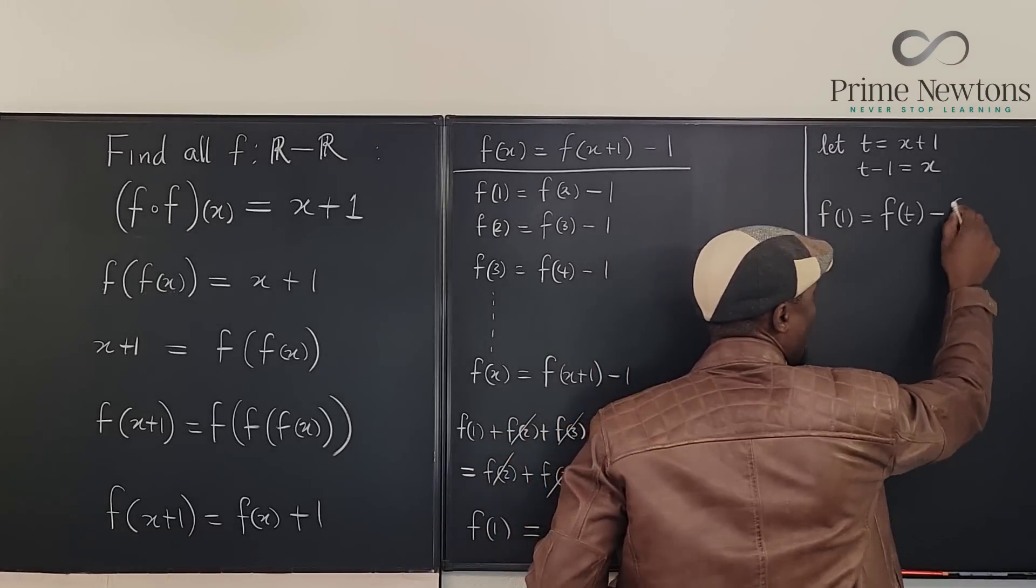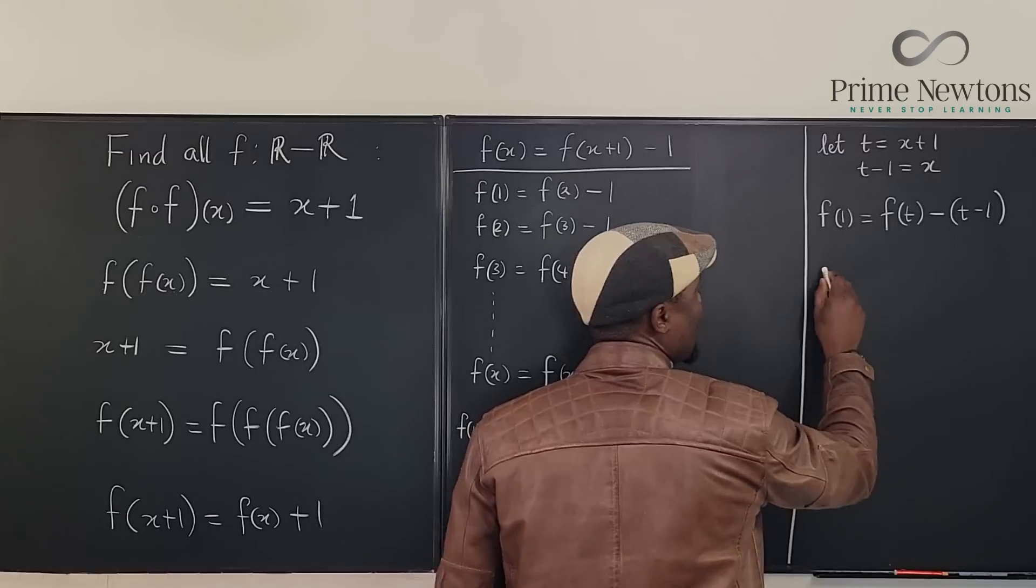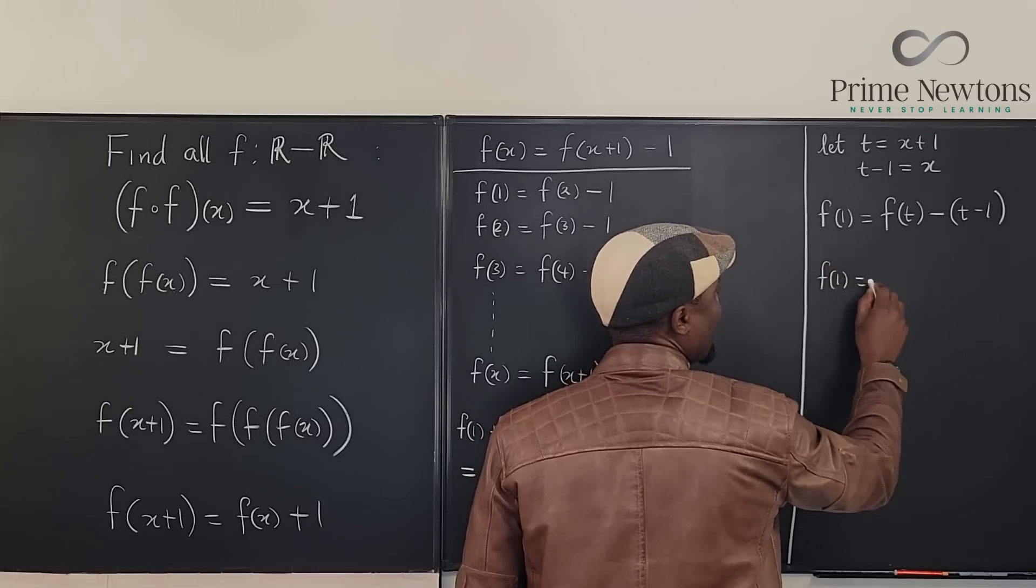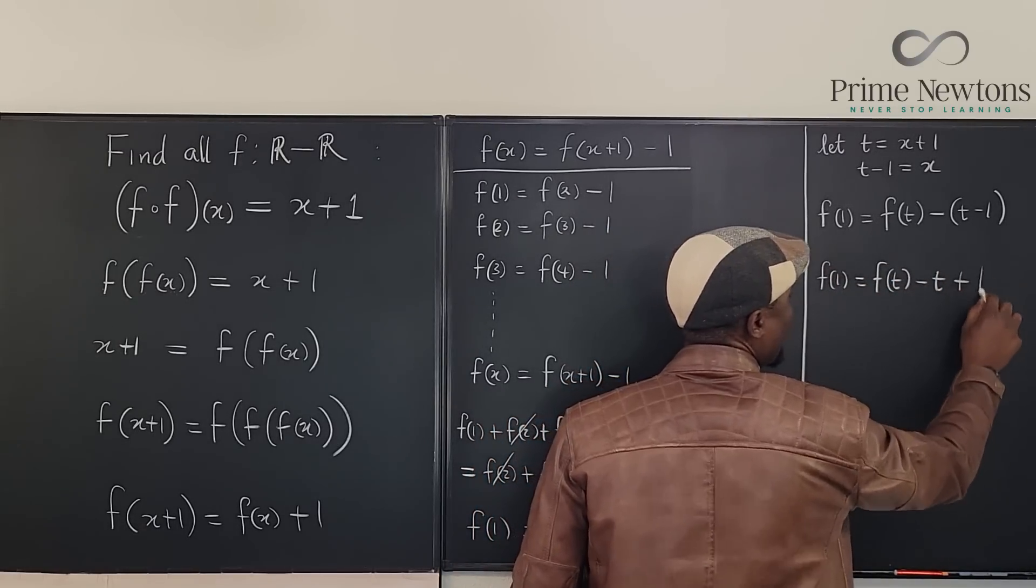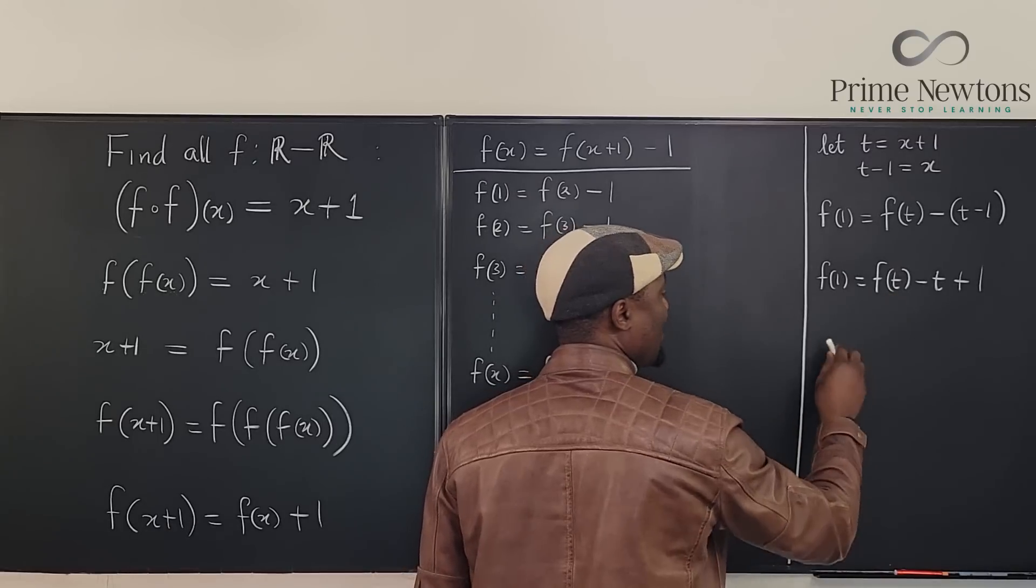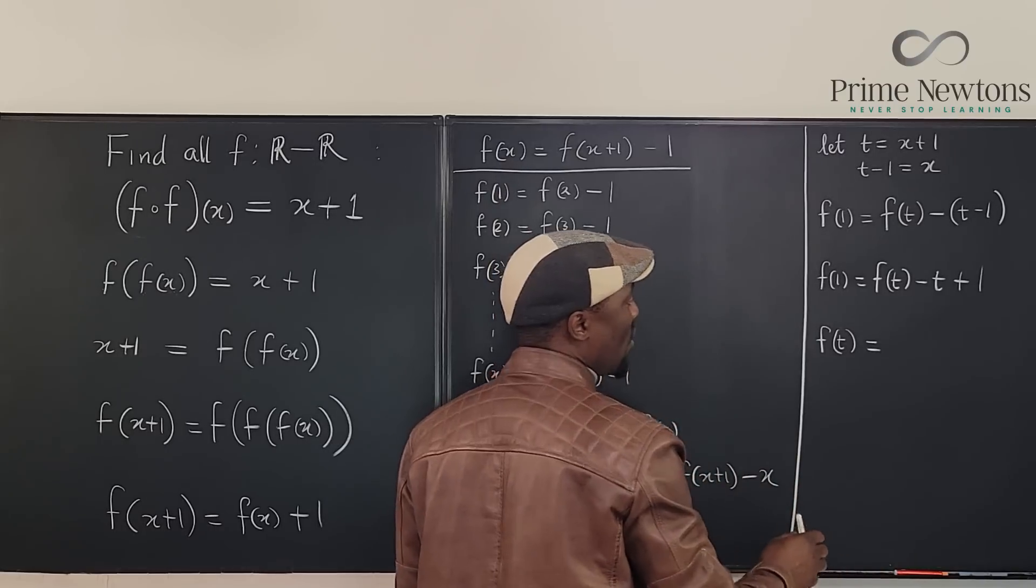So we can go into this function and say that f of one will be equal to f of t minus x. What is x? t minus one. So that f of one is equal to f of t minus t plus one. And this is the guy we're looking for.